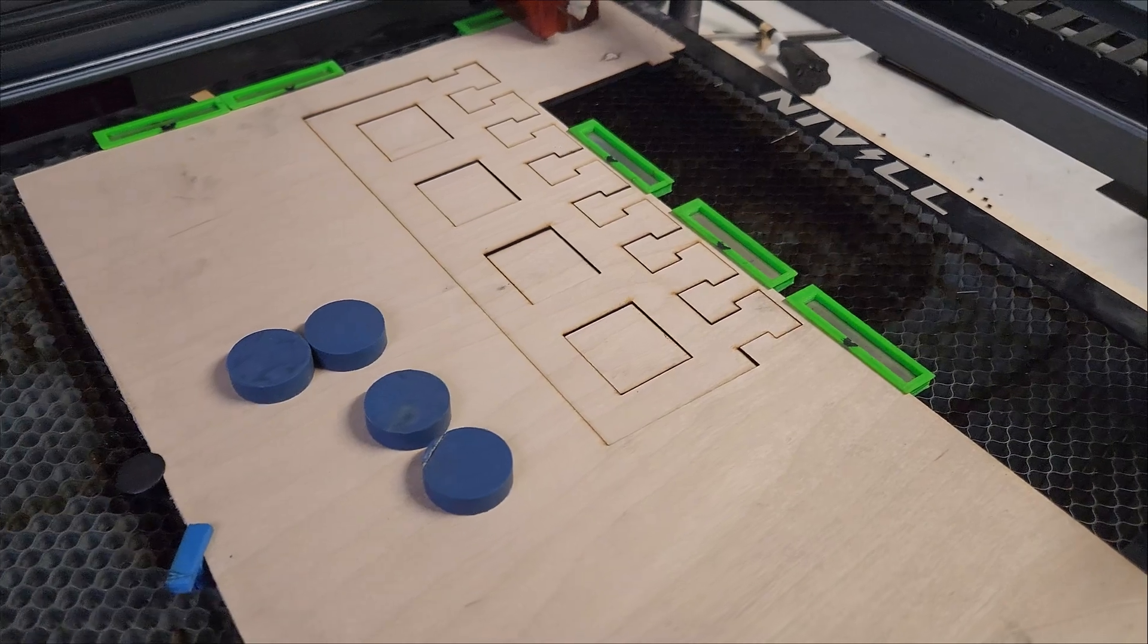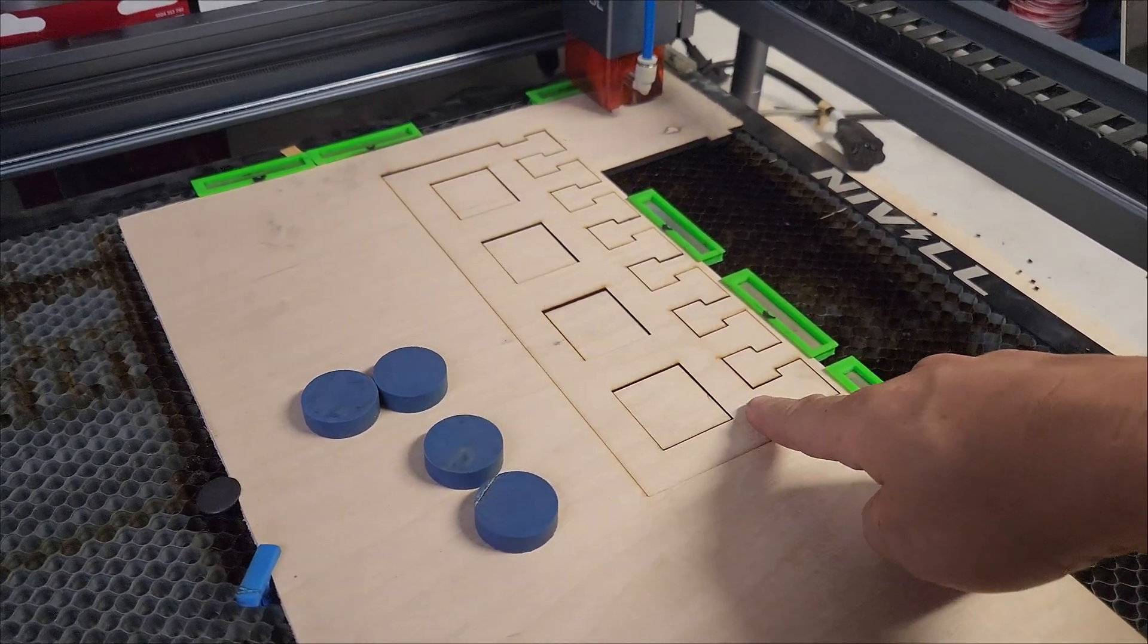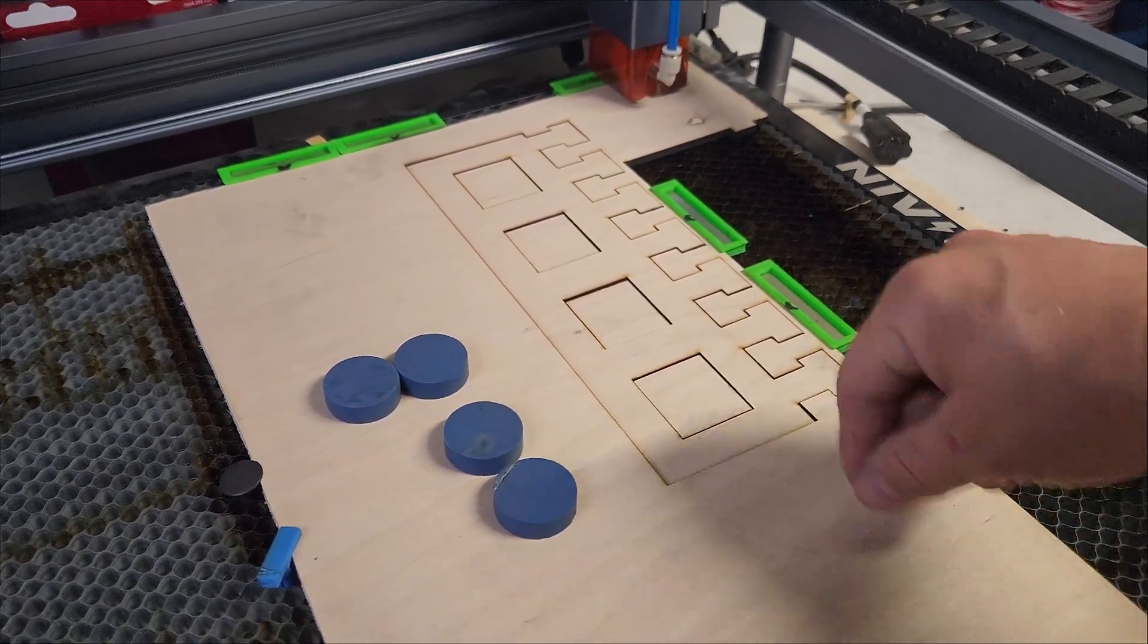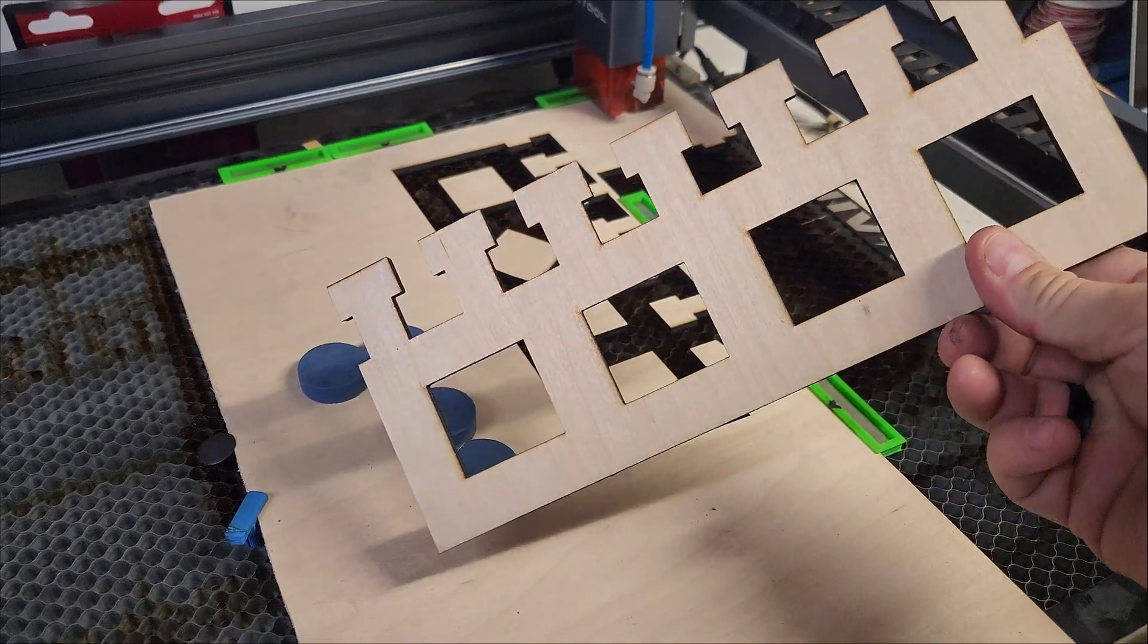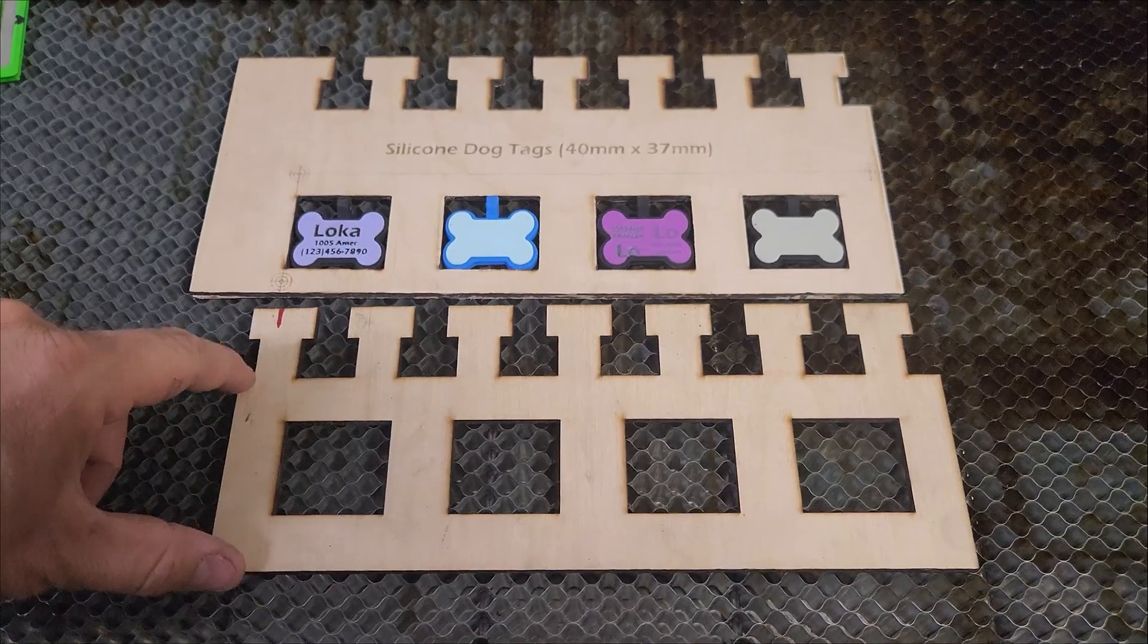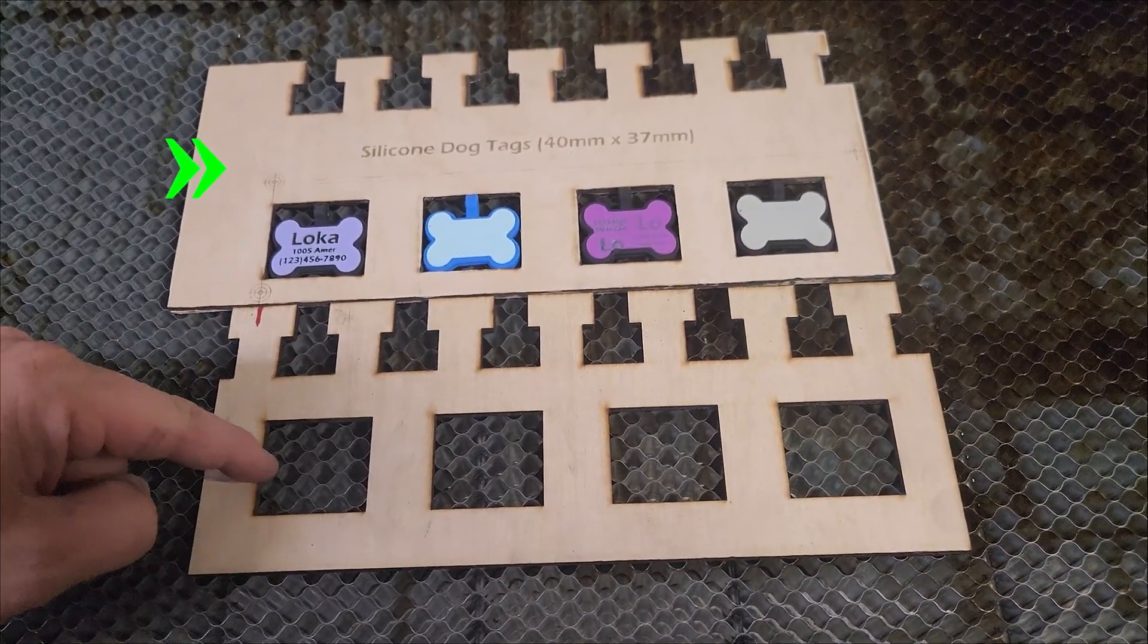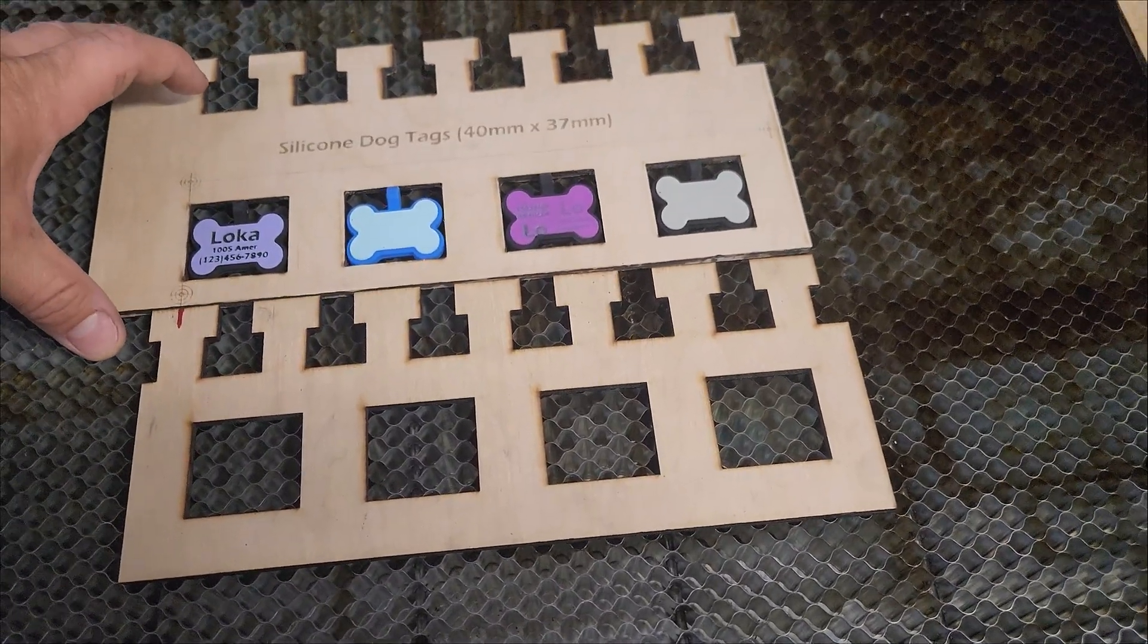This is the jig that I cut out initially just using some scrap wood. But you'll notice it's actually a little bit different size than the one I just showed you in Lightburn. Reason being is this is the first one I made and it was too short. It wasn't tall enough. The laser couldn't get to the top portion of the dog tags. So we made a new one that I'll show later in the video. But for right now, this is the jig I used for the initial burn test to figure out my settings.